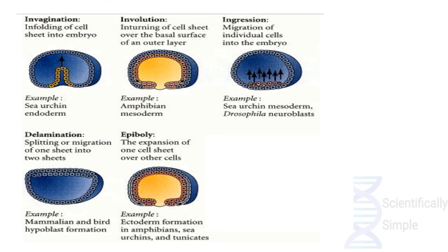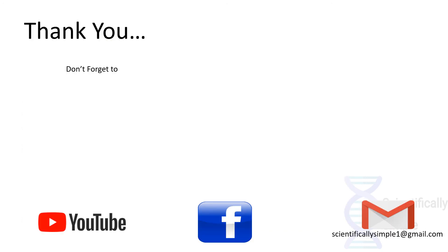Delamination is the process in which a single outer layer sheet splits into two sheets, forming a two-layer structure; it is commonly seen in mammalian and bird hypoblast formation. Epiboly is the expansion of one sheet layer over another cell layer, where the outer layer grows around itself to form a new outer covering; this is seen in ectoderm formation of amphibians, sea urchins, and tunicates. This is all for this video — I hope you enjoyed and got a detailed explanation about developmental biology.